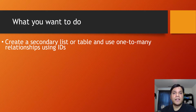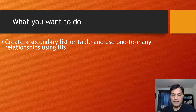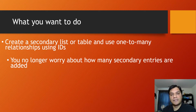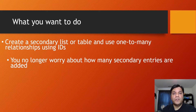What you want to do is a one-to-many relationship, and a good way to do that is using IDs. Once you've set that up, you have a primary table and a secondary one. The secondary table is where you save all the comments, and you don't care how many there are because you're saving them by rows rather than by columns.